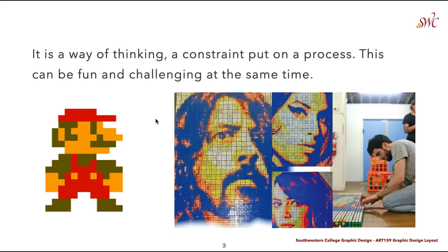Modularity is also a way to put a constraint on a process. Take, for example, Mario from the old school video games — a great example of this. They look this way because of the limitations and restrictions of the processing power available at that time. There were not a lot of pixels available on screens, so there was not a high resolution. This has really been popularized by pixel art, and people sort of embrace this old school look now.